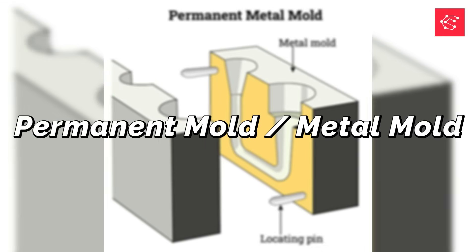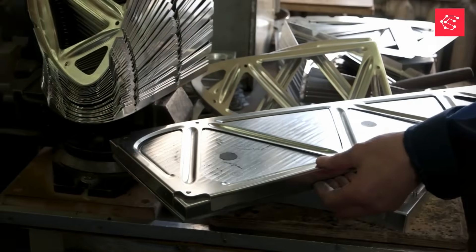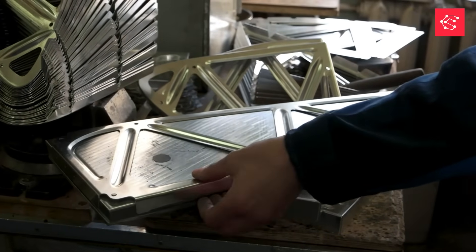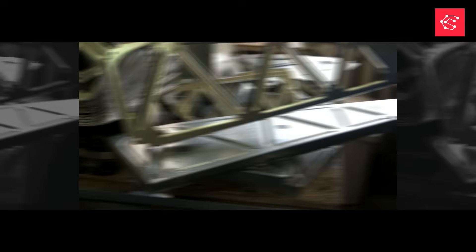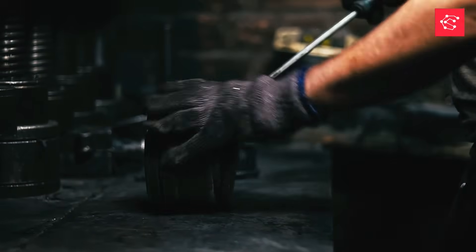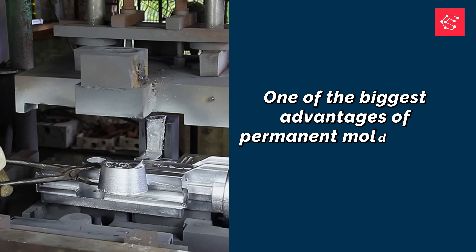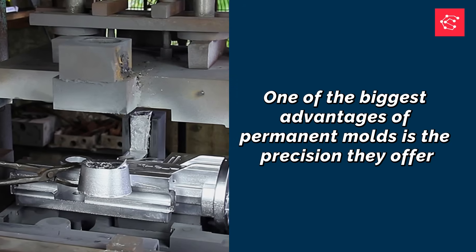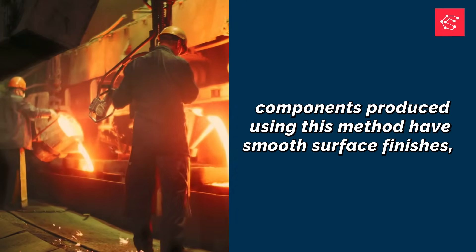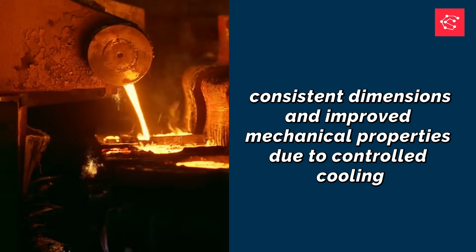Permanent mold, also known as metal mold. Permanent molds are made from durable materials such as cast iron, steel, or aluminum alloys. These molds are designed for repeated use, making them suitable for medium to high volume production. One of the biggest advantages of permanent molds is the precision they offer. Components produced using this method have smooth surface finishes, consistent dimensions, and improved mechanical properties due to controlled cooling.